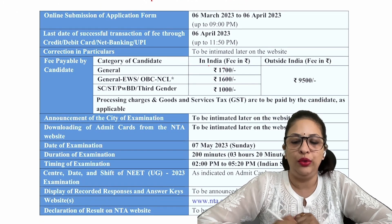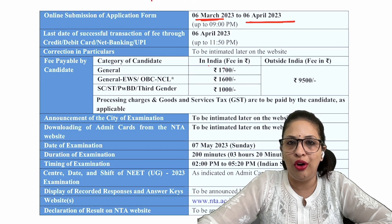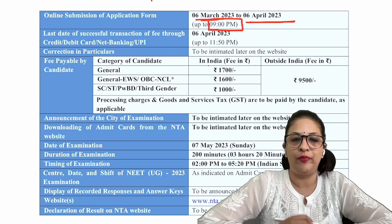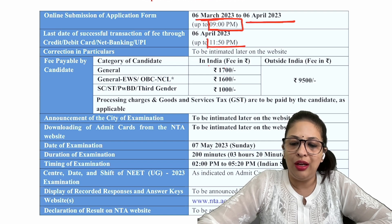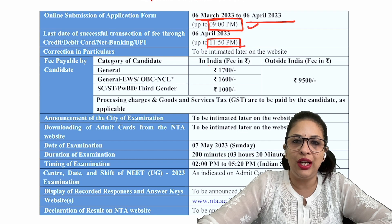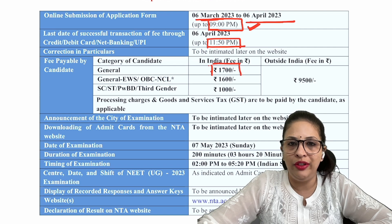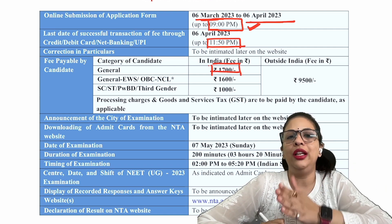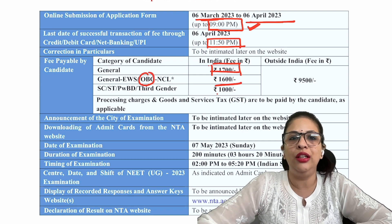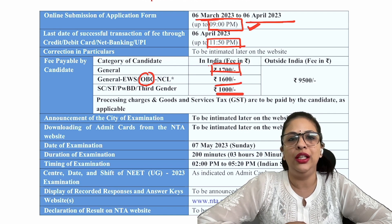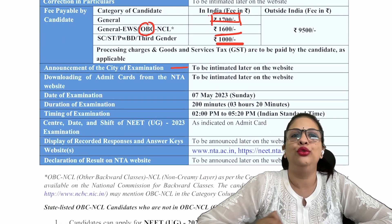Now let's come to important dates: your form is available from 6th March to 6th April — you can fill the form till 9 PM at night. The fee can be paid till almost 11:50 PM on 6th April. For General category students with no quota, the application form fee is ₹1700. For Economically Weaker Section or OBC weaker section it is ₹1600, and for SC/ST, physically handicapped, and third gender it is ₹1000.